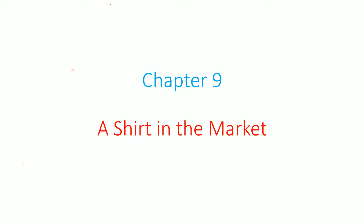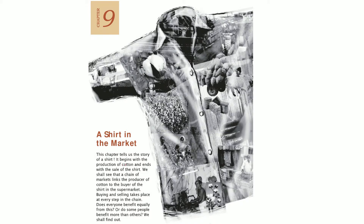We are looking at chapter number 9, a shirt in the market. So what we are going to see here is, we will start with the production of cotton and then the discussion will end at the sale of the shirt. We will try to know about the chain of market links from the producer of cotton to the buyer of the shirt in the supermarket, because we as consumers only know that there is a shirt, we need to spend money and buy it. But how this shirt came into existence, what buying and selling has taken place, what is the chain.